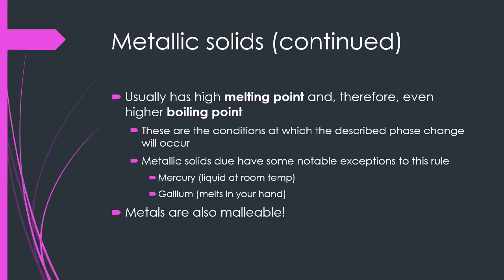Metals are also, very importantly, malleable and ductile. Because of their free-moving electrons, they can be bent in shape without breaking much more readily than the majority of the other types of solids.